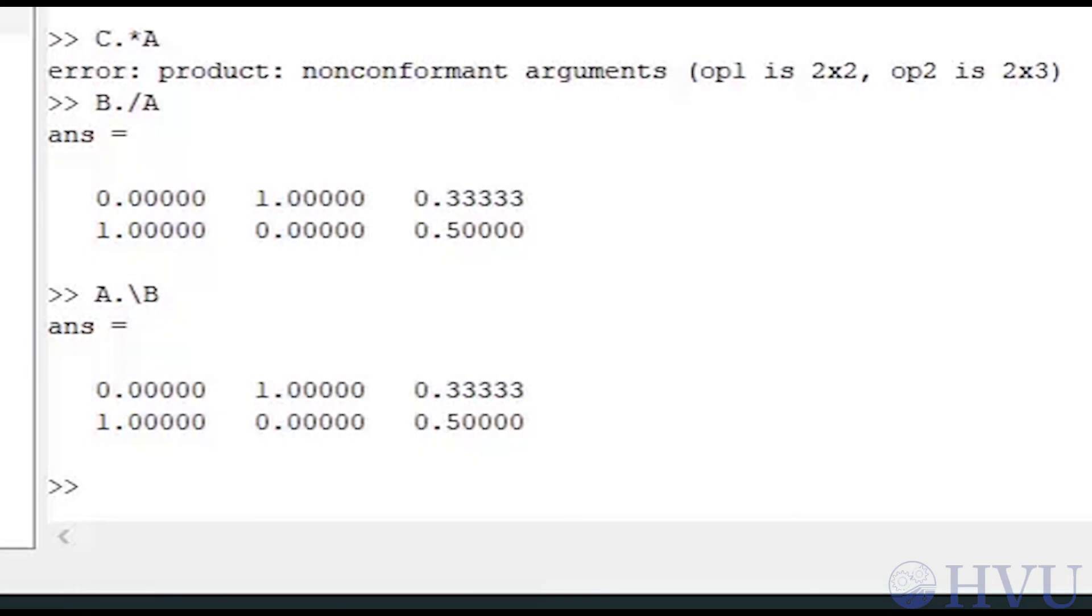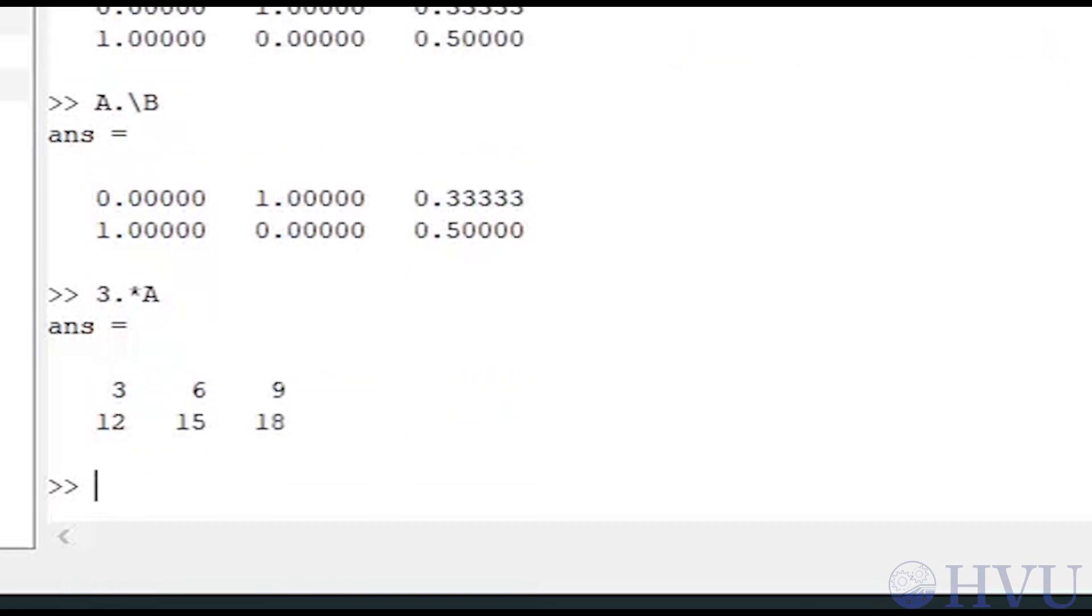If we multiply an array by a scalar, the scalar multiplies every element in the array. For example, 3 dot times A multiplies each element in A by 3 and gives us an array back that's the same size as the array A.